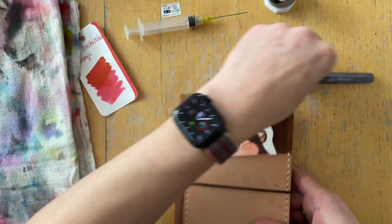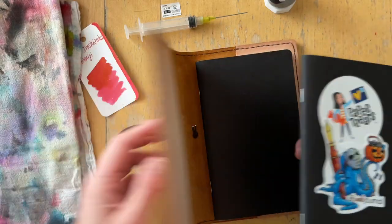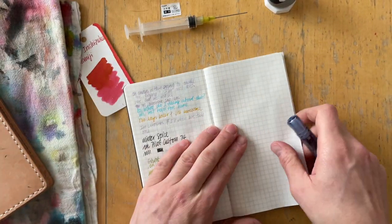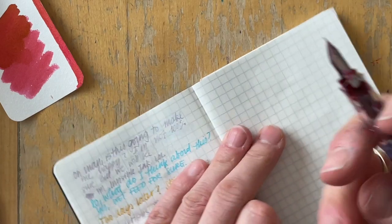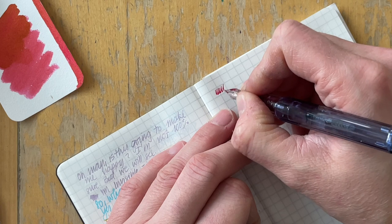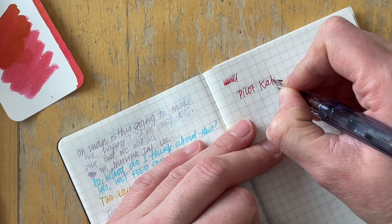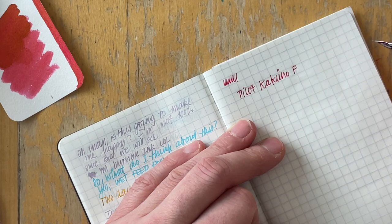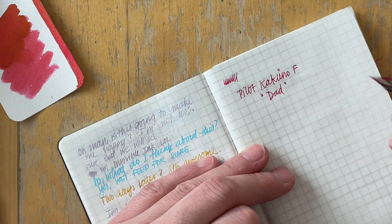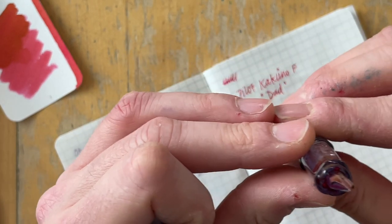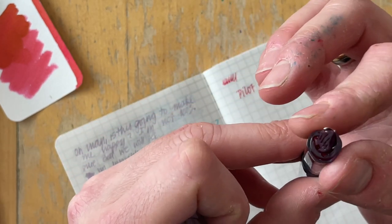Let me open my ink and pen testing notebook for all the random tests and trials that I need to make. All right, so this is, let's see if it actually writes. Yes, this is the Pilot Kakuno with a fine nib. It's the dad.